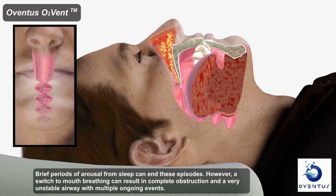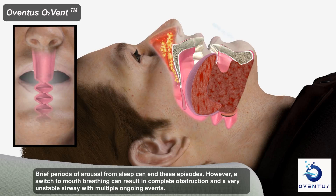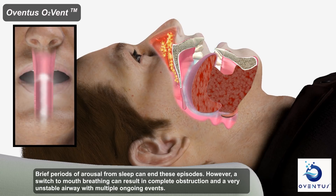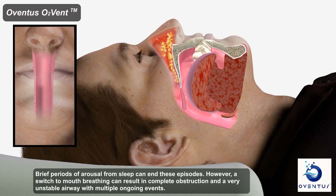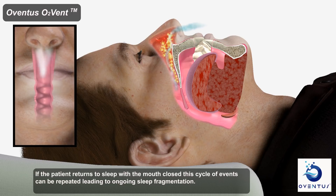Brief periods of arousal from sleep can end these episodes. However, a switch to mouth breathing can result in complete obstruction and a very unstable airway, with multiple ongoing events. If the patient returns to sleep with the mouth closed, this cycle of events can be repeated, leading to ongoing sleep fragmentation.